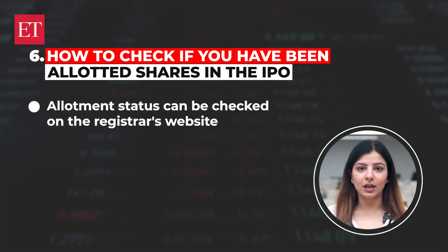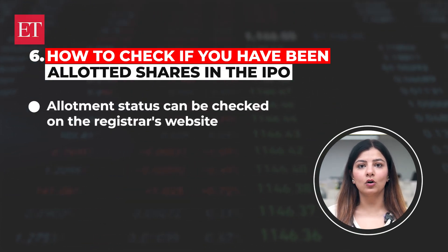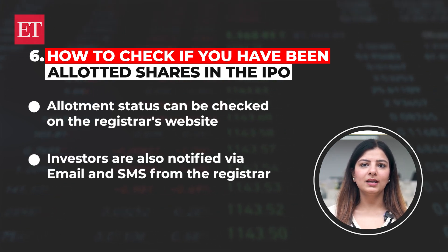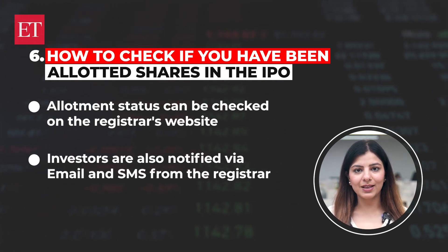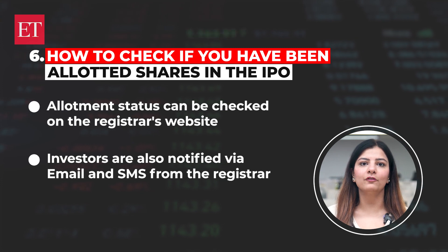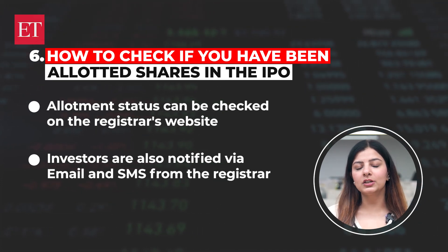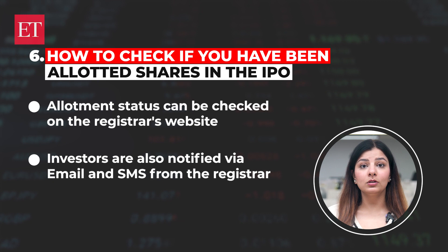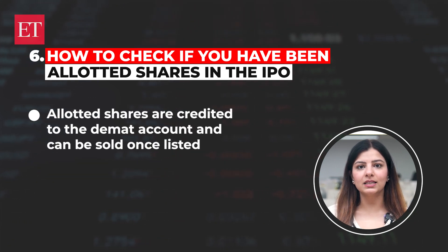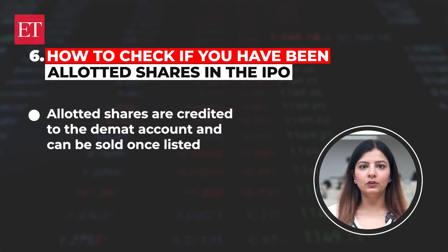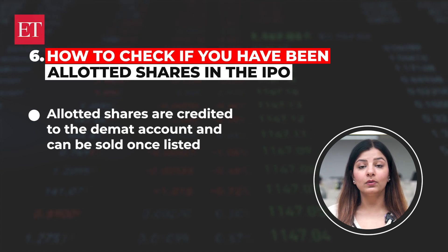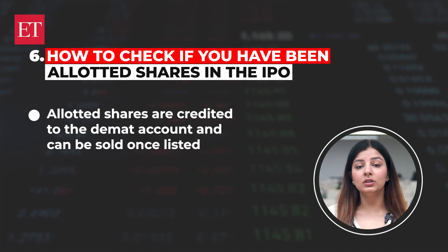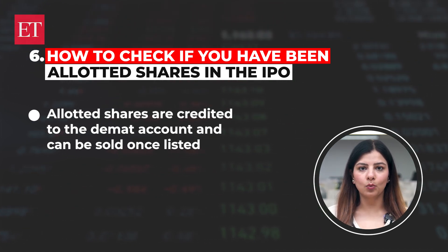Question 7: How to check if you have been allotted shares in the IPO? Once an IPO closes for subscription, investors must check whether shares have been allotted. This can be checked on the registrar's website. Investors are also notified via email and SMS from the registrar. If they are allotted shares, they will be credited to the DMAT account and can be sold once listed. That is all for today. Stay tuned to ET Markets for more.